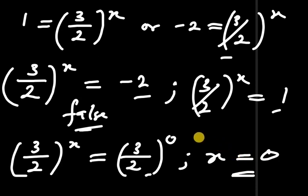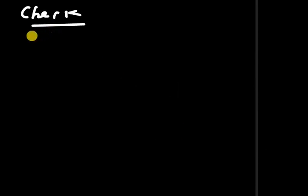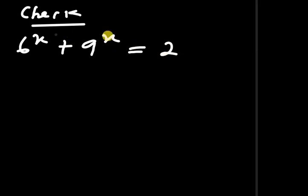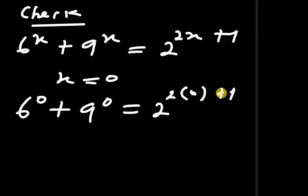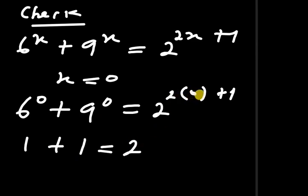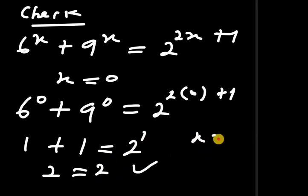Let's verify by checking with the original equation: 6 to the power of x plus 9 to the power of x equals 2 to the power of 2x plus 1, with x equals 0. Substituting: 6 to the power of 0 plus 9 to the power of 0 should equal 2 to the power of 2 times 0 plus 1. This gives 1 plus 1 equals 2 to the power of 1, which is 2 equals 2. So x equals 0 is confirmed as the correct solution.